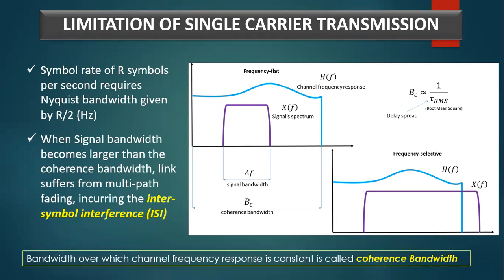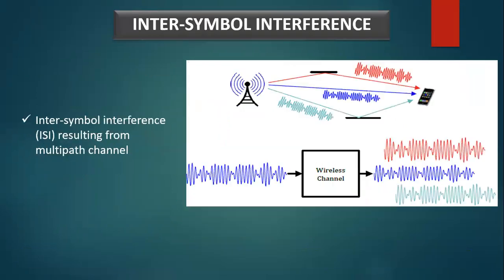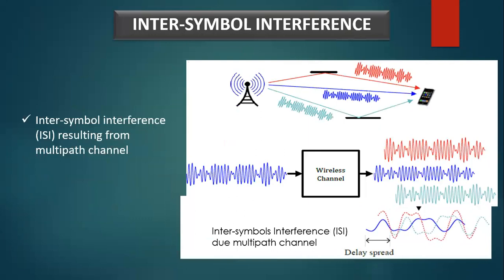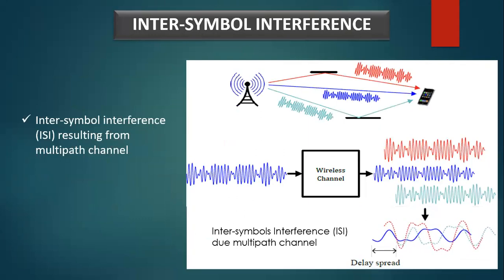The coherence bandwidth is the bandwidth over which a channel's frequency response stays constant or has very little variation. Inter-symbol interference results from a replica of the same symbol arriving at the receiver from a different path in the multipath channel, as depicted in the figure.